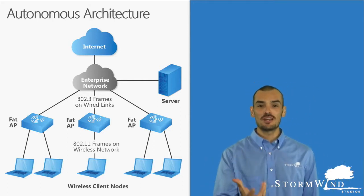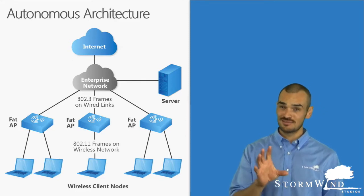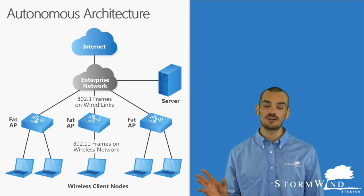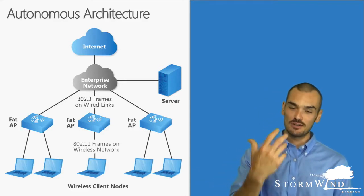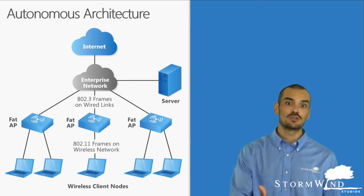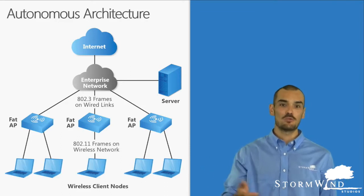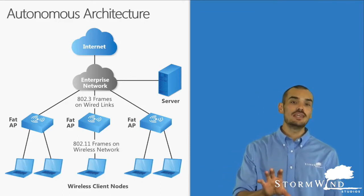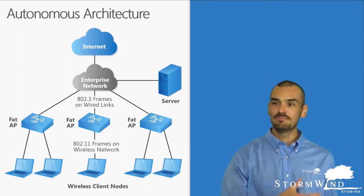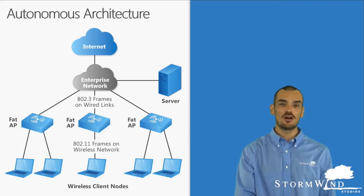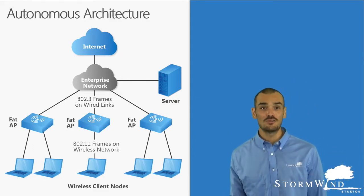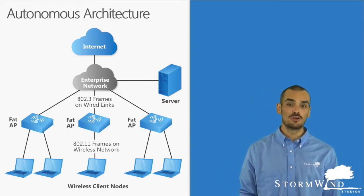The first one is primarily intended for smaller organizations — and that phrase definitely has an asterisk associated with it. When we think about an autonomous architecture, we're typically thinking of a very small deployment, maybe only one or two access points. There's really no need for a centralized architecture if we've only got one or two access points, and that's really one of the key implications to keep in mind.